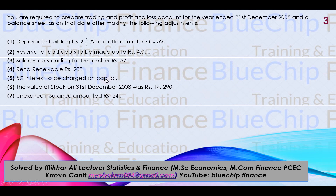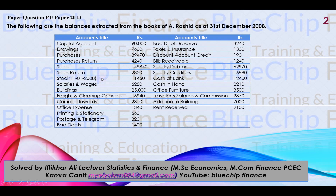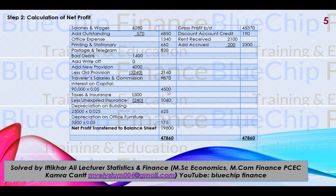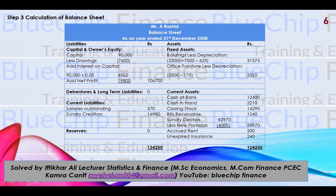5% interest to be charged on Capital — as discussed in detail in the previous video. This is an indirect expense in the Profit & Loss Account on the debit side, and it is also added to the Capital account. Capital is 90,000, so 5% of 90,000 = Rs 4,500. This 4,500 is treated as indirect expense in the Profit & Loss Account and is also added to Capital. Drawings are subtracted and Net Profit will also be added to the Capital account.